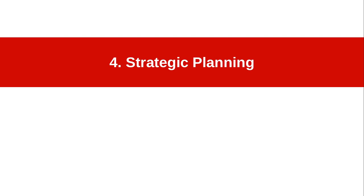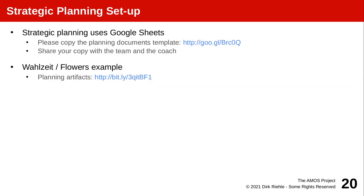Beyond the tools that GitHub gives us, we need to do some more planning and collecting of information. So that it's not spread all over the place, we use a single Google Sheet where you will enter and track all relevant data that can't be provided through GitHub easily. Please copy the planning document template to make it your planning documents. If you wonder about an example, the WildSight Flowers example is available and linked to from here, and I will use it now to explain how these strategic planning documents are used.